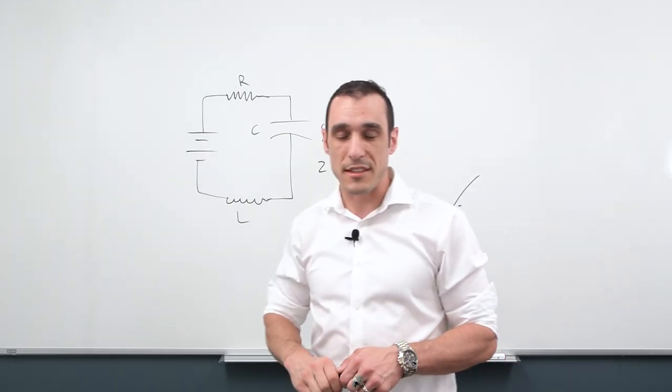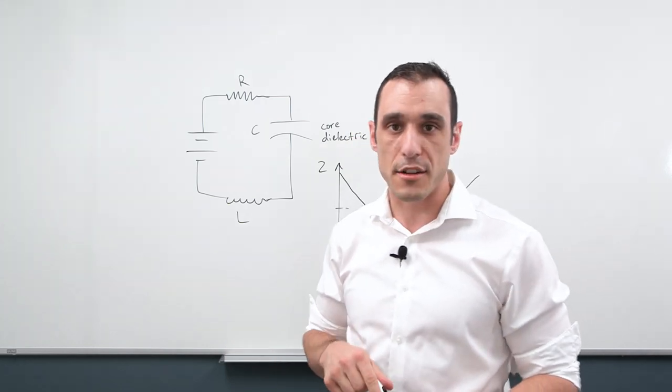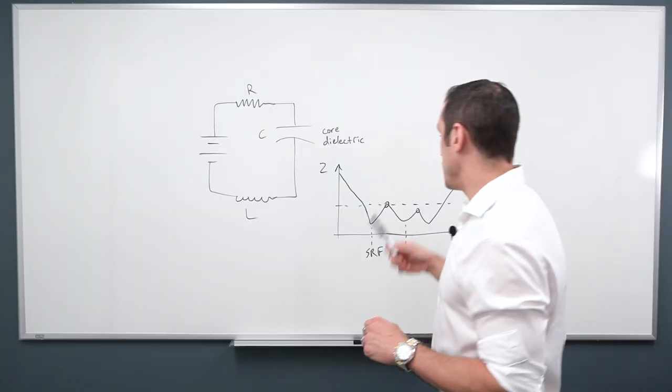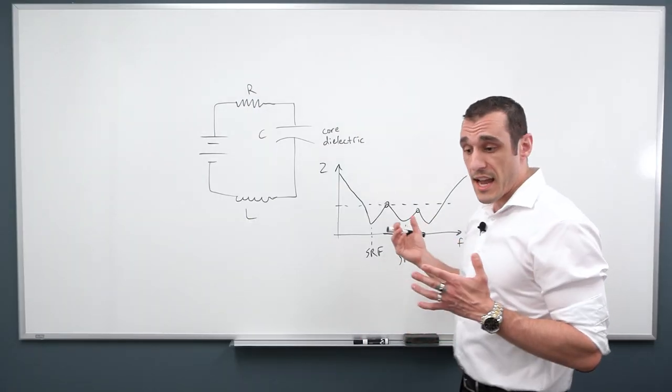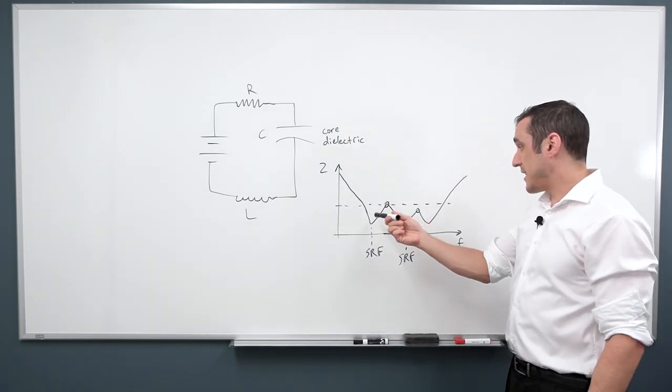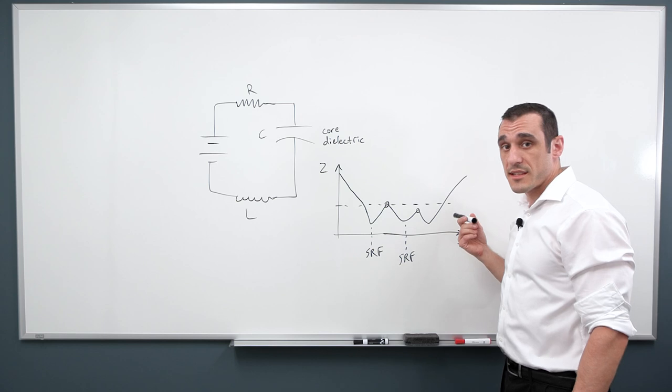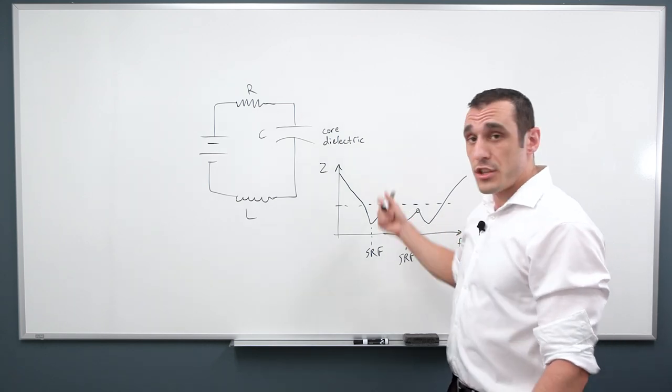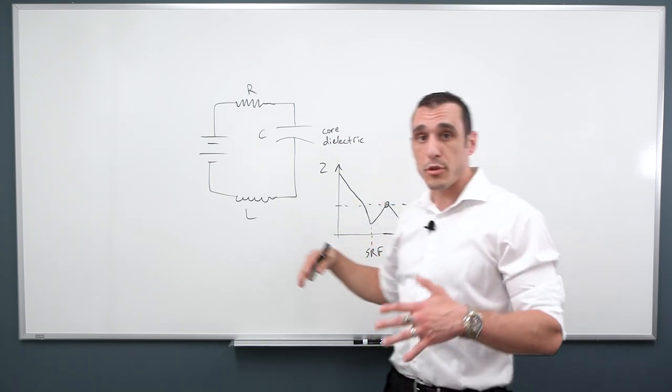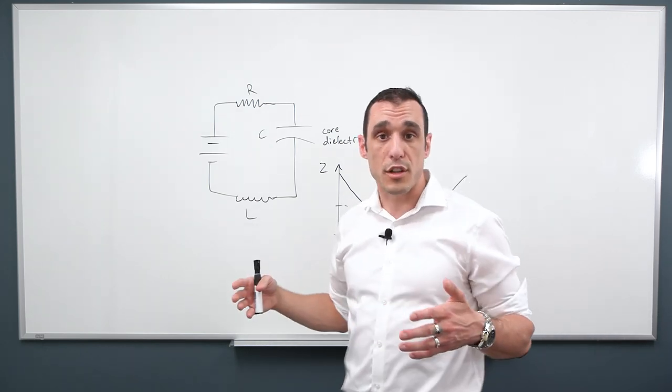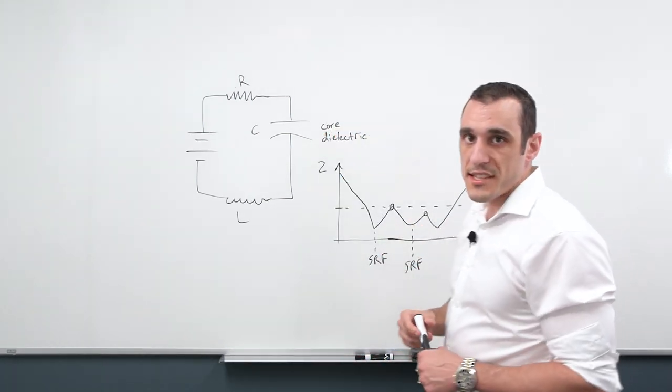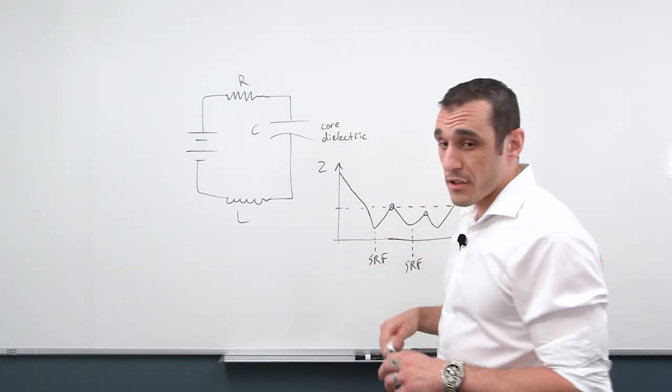And so this is why in some high-speed designs, especially designs that are using an FPGA that has very many pins, like hundreds of pins, you might see the design having hundreds of capacitors in it. And the reason they do that is so that they can space out these self-resonances in such a way that you get the impedance spectrum to be low enough that you are not producing a very large voltage fluctuation when the components start switching. So you have to add up all of these resonances in parallel in order to produce a really low impedance curve.